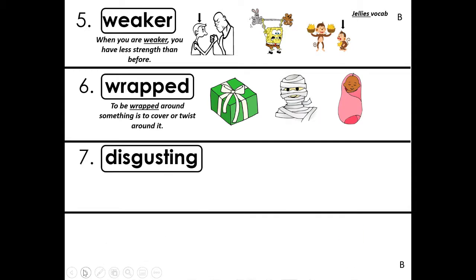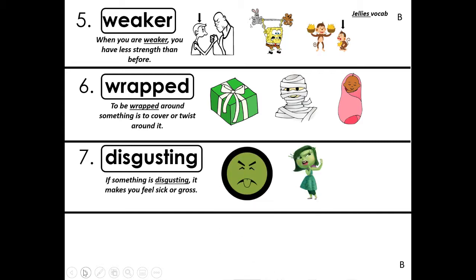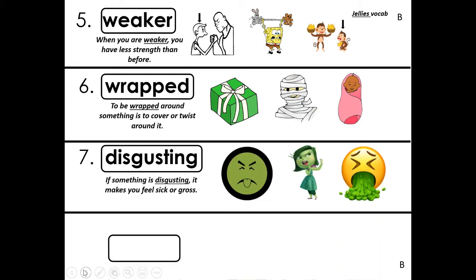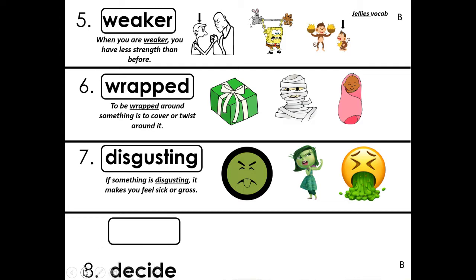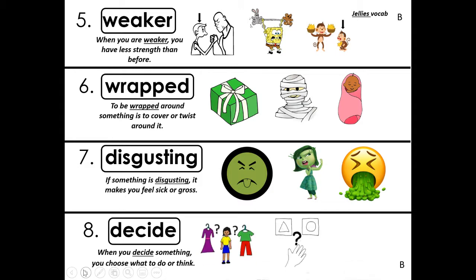Number seven, disgusting: if something is disgusting, it makes you feel sick or gross. And finally, our last vocabulary word to review is decide. When you decide something, you choose what to do or think.